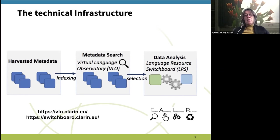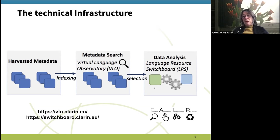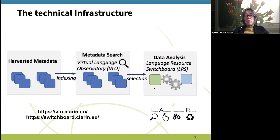Because of this alignment of standards, it's possible to harvest the metadata and make them searchable in the service we call the Virtual Language Observatory — the VLO. Here you can search based on facets across many data sets in many languages for material of your interest. Several services are then available to help you figure out which analysis tools can be applied to your data — this is done in what we call the Language Resource Switchboard, a matchmaker for data and tools, which takes into account the language of the data and the functionality available.